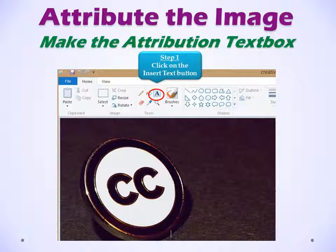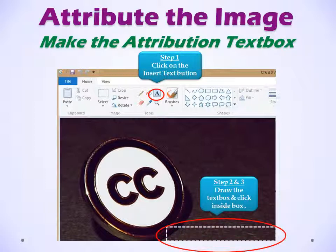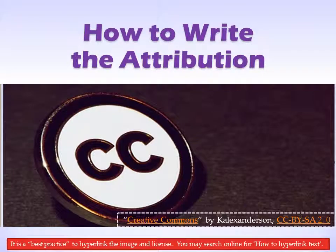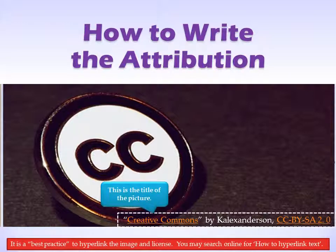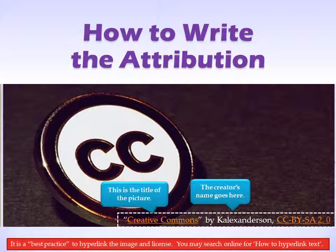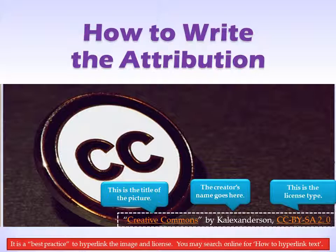Step 1, click on the insert text button — that's the A. Step 2, draw the text box and click inside. Now let's write the information about the image on the image. How to write the attribution: first we write the image title, then the creator's name, then the license type. It's a best practice to hyperlink the image and license. You may search online for how to hyperlink the text.